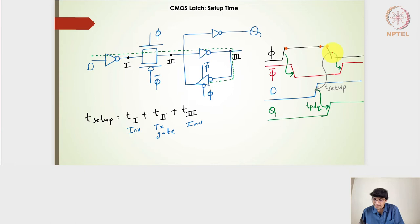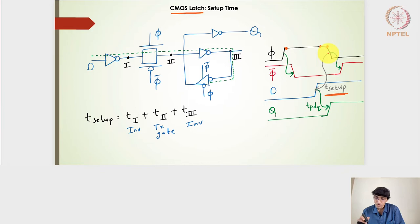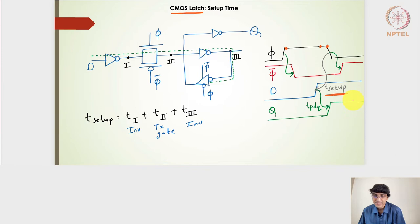This is defined by the setup time for the CMOS latch design. The setup time says the input should be passed at least before the t_setup time of the falling edge of the clock so that the output is captured properly. This ensures the input is passed at least before t_setup with respect to the falling edge of the clock for a high-level latch design. For a low-level latch design, the t_setup would be with respect to the rising edge.